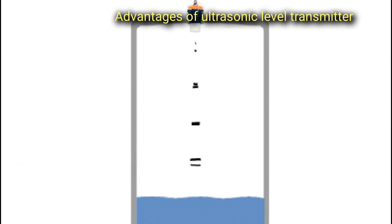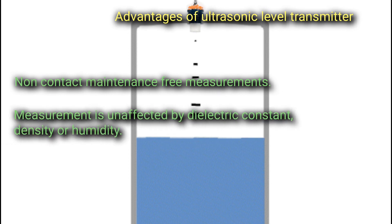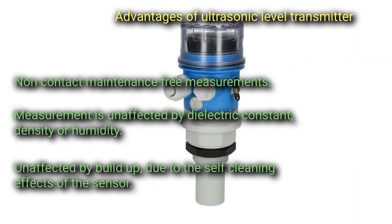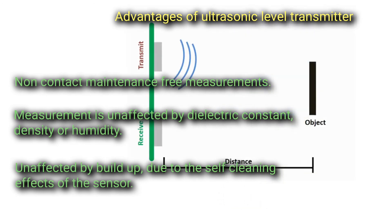Advantages of ultrasonic level transmitter: Non-contact maintenance-free measurement. Measurement is unaffected by dielectric constant, density, or humidity. Unaffected by build-up due to the self-cleaning effects of the sensors.